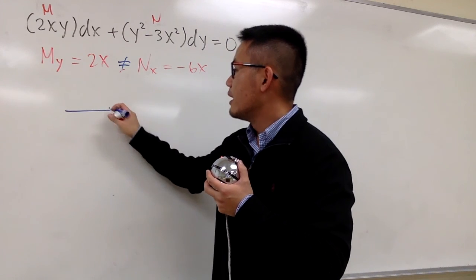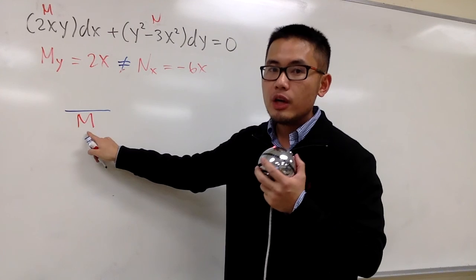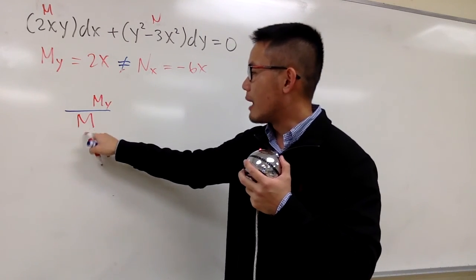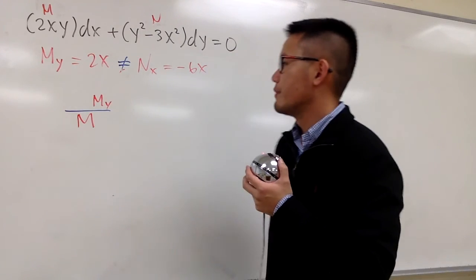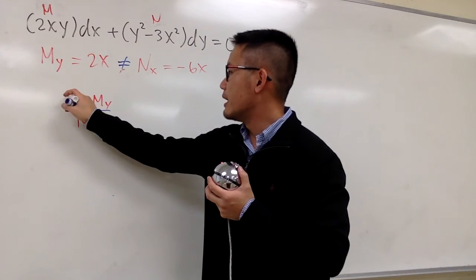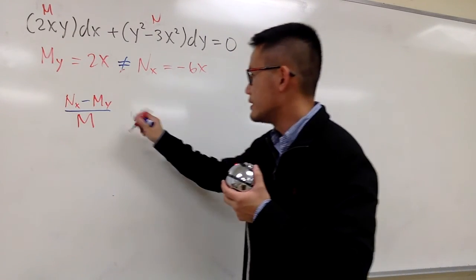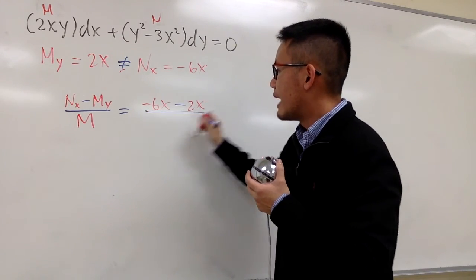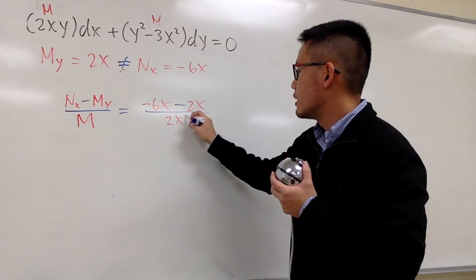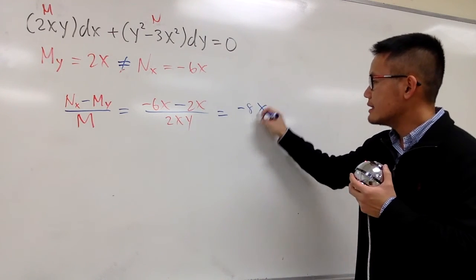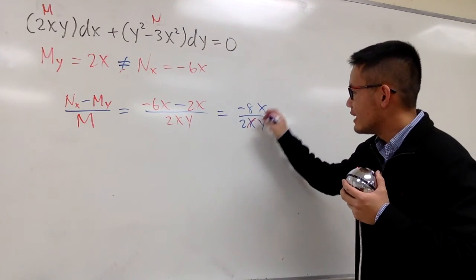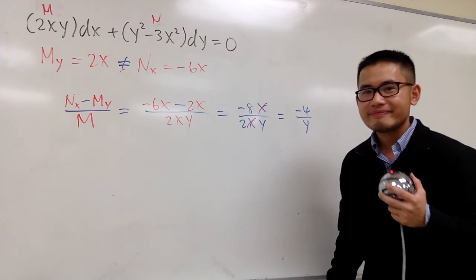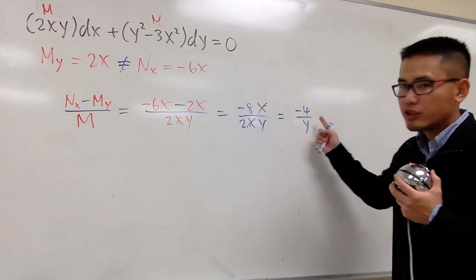If I know I want to divide by M on the bottom, that means the top should be N sub x minus M sub y. So: N sub x is negative 6x, minus M sub y which is 2x, divided by M which is 2xy. On the top you get negative 8x over 2xy on the bottom. x and x cancel, and you end up with negative 4 over y.